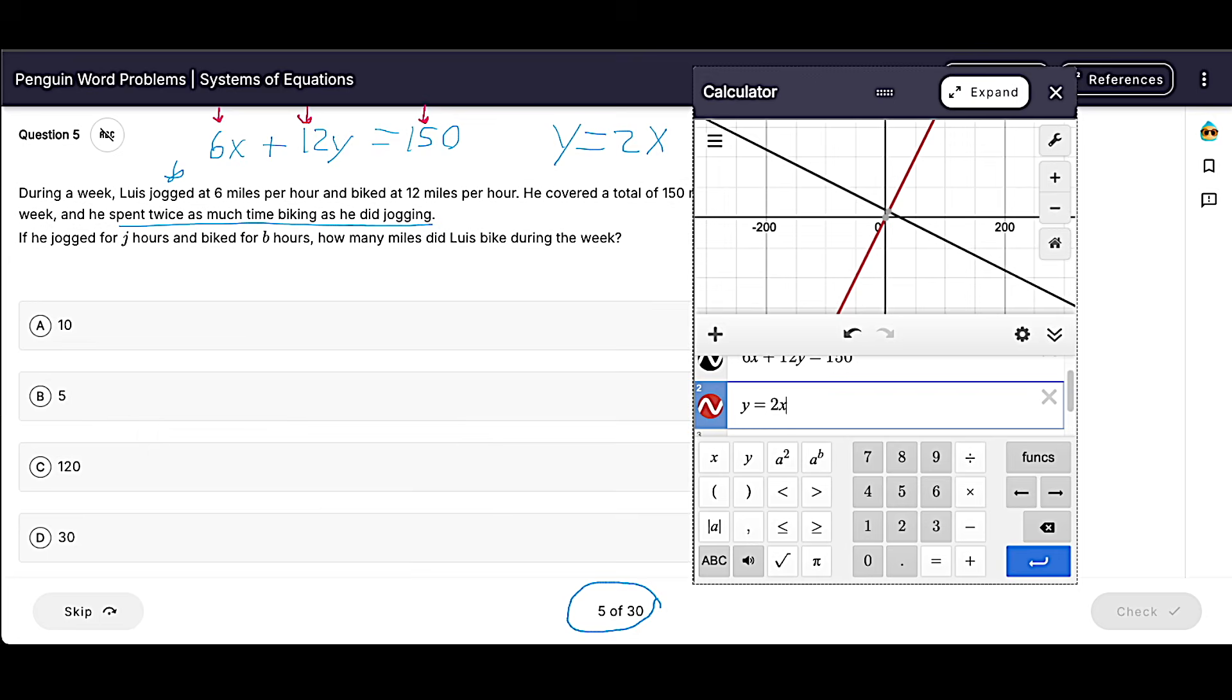So if Y equals 10, that means that he biked for 10 hours. But to get the number of miles, I'm going to have to take those 10 hours and multiply them by 12 miles per hour. So 12 times 10 would be 120. So in this case, my answer is actually 120.